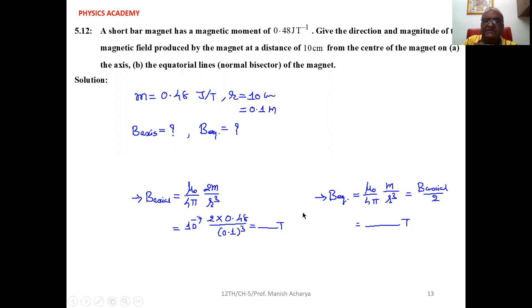B_equatorial is half of B_axial. So whatever is the answer for B_axial, divide it by 2, and you will get the magnetic field at the same distance, 10 cm, on the equatorial line. Clear to all of you.